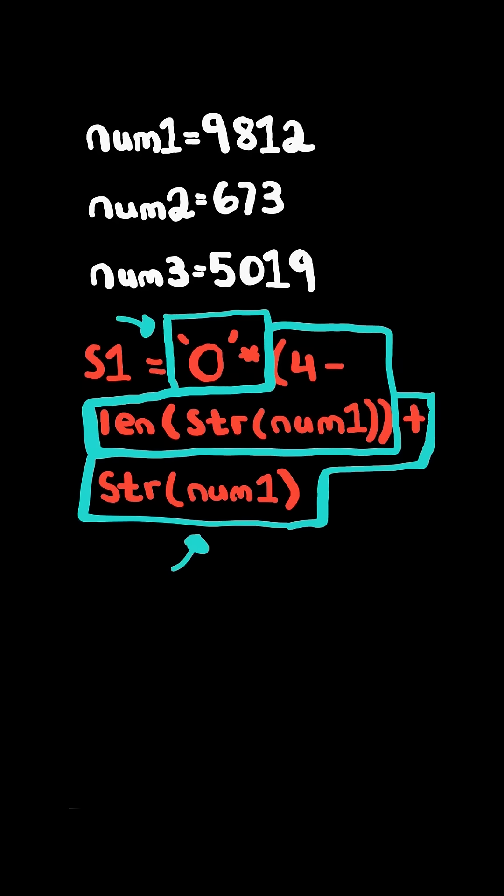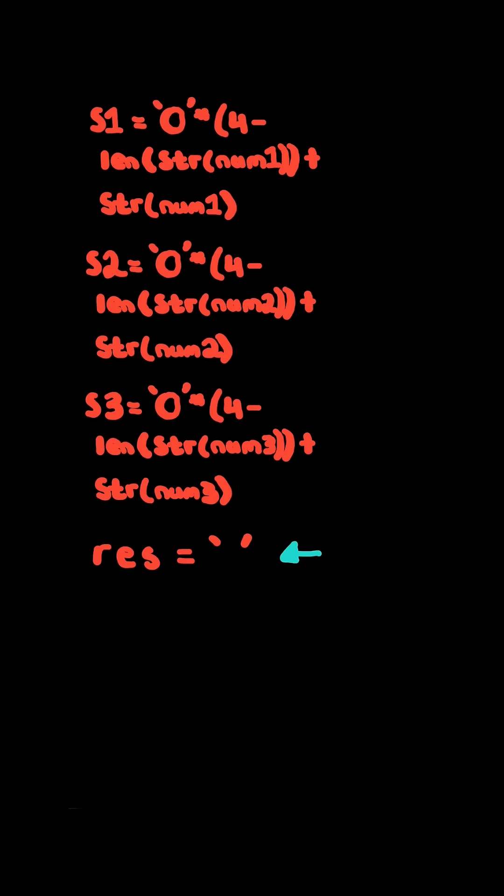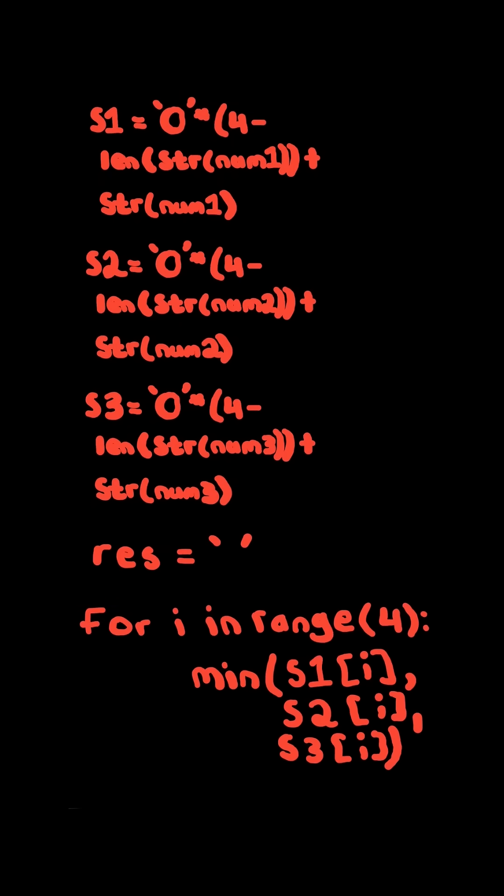We append this result to the string num. Repeat this process for num2 and num3. Initialize a result string. Iterate through the range for to determine the minimum value at the index and add it to the result.